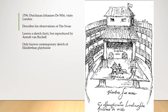Here's an intriguing sketch. In 1596, a Dutchman named Johannes De Witt went to London, visited the Swan Theater, left some descriptions in his journal, and drew a sketch of it — which, as far as we know, is the only contemporary sketch of an Elizabethan playhouse. The original by De Witt was lost, but another of his countrymen, a contemporary named Arendt van Buckel, reproduced and copied it. So this is what van Buckel said was the drawing that De Witt left of the Swan Theater — as far as we know, the only contemporary sketch of an Elizabethan playhouse that survives.